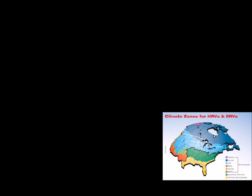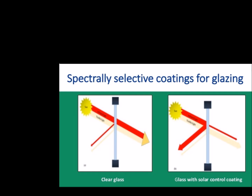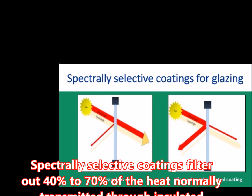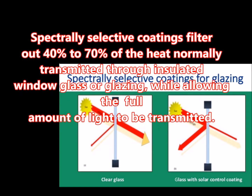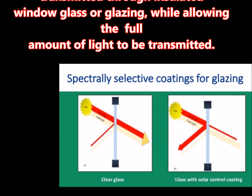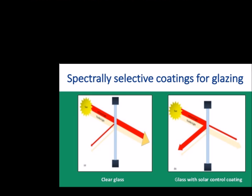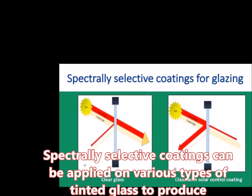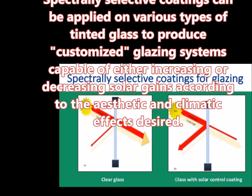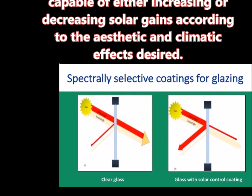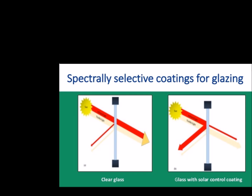Spectrally selective window glazing or glass. A special type of low-E coating is spectrally selective. Spectrally selective coatings filter out 40 to 70% of the heat normally transmitted through insulated windows, glass, or glazing, while allowing the full amount of light to be transmitted. Spectrally selective coatings can be applied on various types of tinted glass to produce customized glazing systems capable of either increasing or decreasing solar gains according to the aesthetic and climatic effects desired. Computer simulations have shown that advanced window glazing with spectrally selective coatings can reduce the electric space cooling requirements of new homes in hot climates by more than 40%.